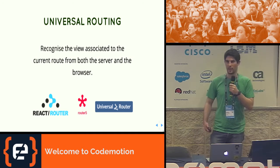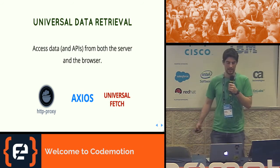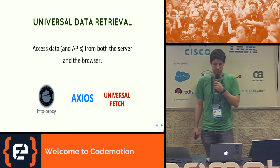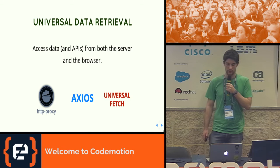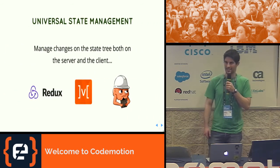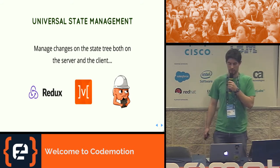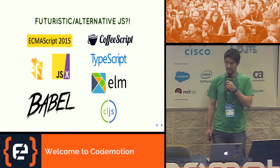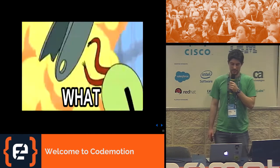So you start to see why it's complicated — there are so many choices, and still it's not over. We have universal data retrieval: getting data from a database or APIs needs to work both on client and server. Then universal state management: keeping state consistent between browser and server — we have Redux, MobX, Cerebral, and hundreds of tools. We also have different languages, dialects, and extensions. JavaScript is a big mess at this stage.